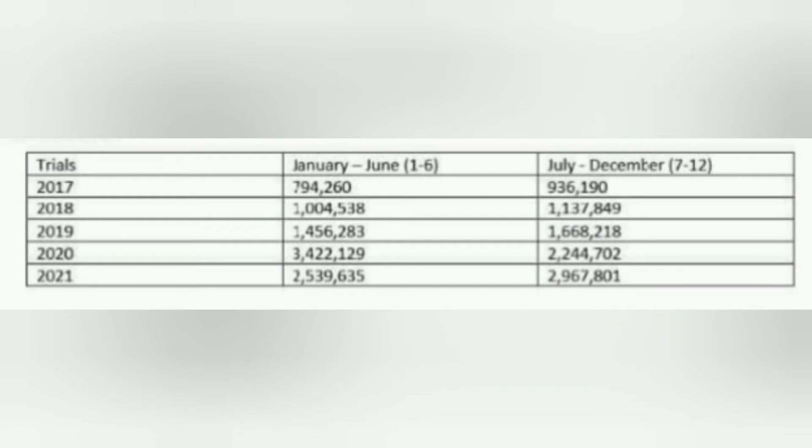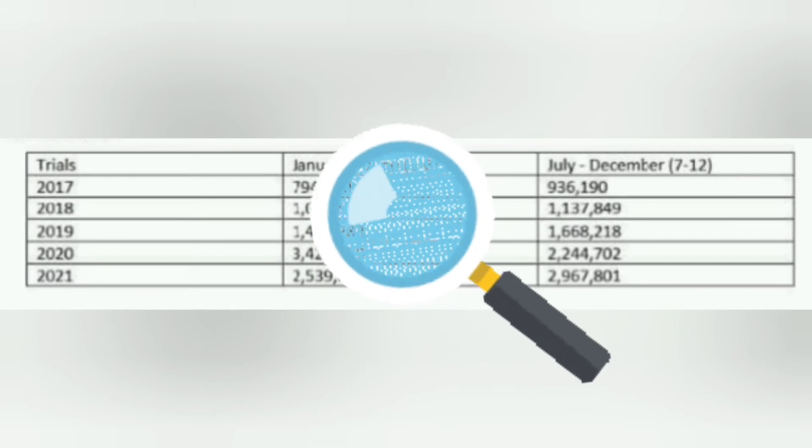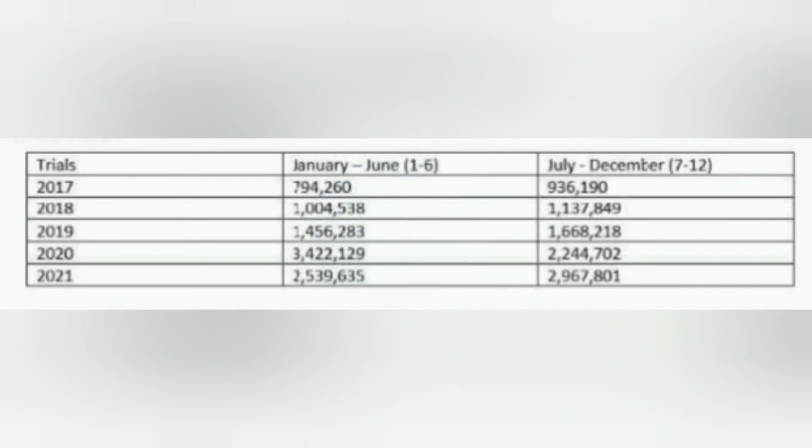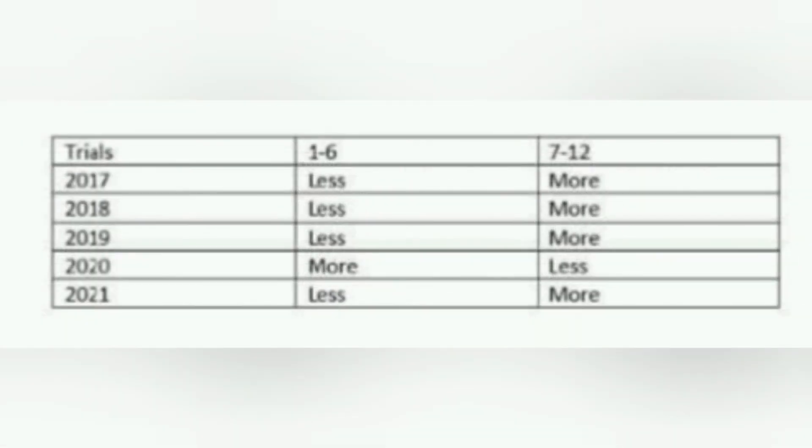After adding the numbers of total visitors from January to June and July to December in the last five years, we get this. Now we can observe from this table which half of the year had more total visitors. Through our observations we can conclude that in four out of five years, the months July to December had more total visitors than January to June.